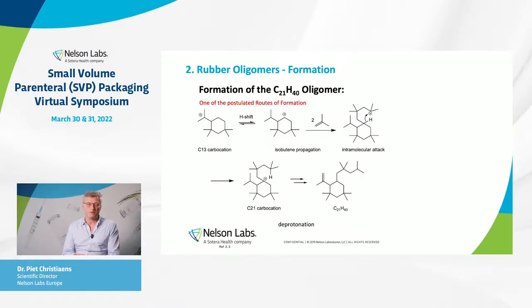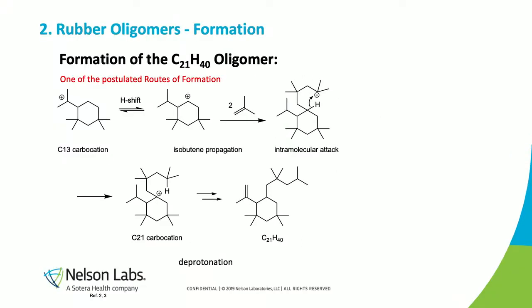For the C21 oligomer, the reaction continues with the C13 carbocation as seen on the previous slide. First, there is a proton shift which ensures that the positive charge in the carbocation is located on the cyclohexane ring, which is more stable. Then in the propagation step, two more isobutylene monomers are added, creating the C21 carbocation. With abstraction — or deprotonation — you create the stable C21 oligomer.